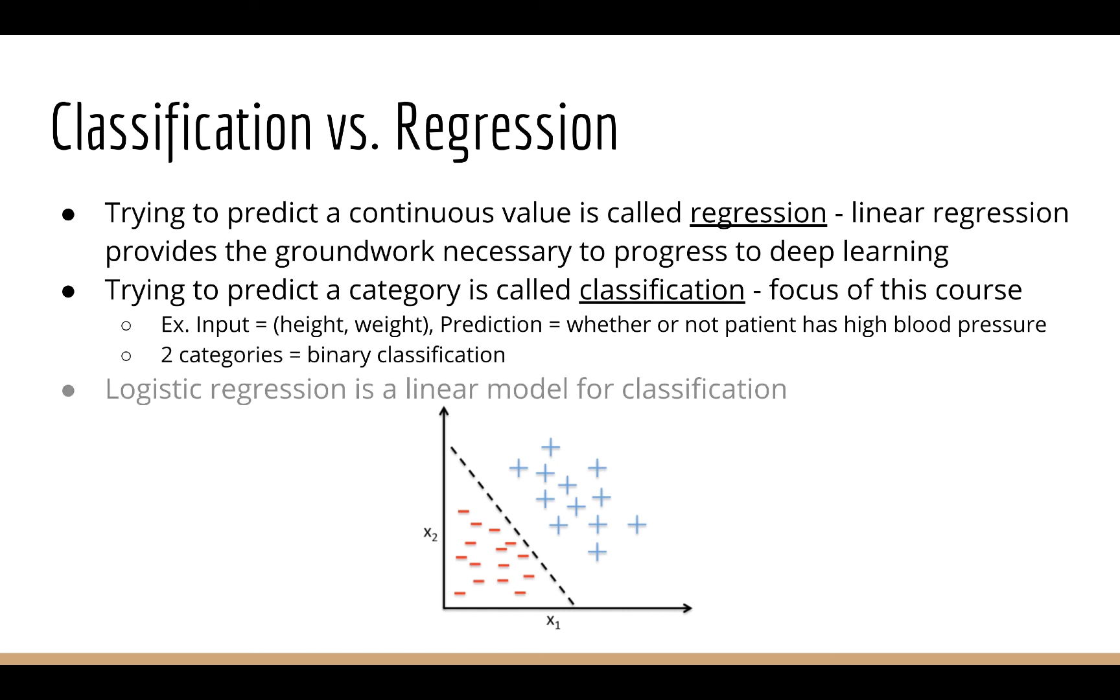Again, logistic regression uses a line or a plane for the model, but instead of this line or plane trying to predict a value, it now provides a boundary. We can say anything on one side of this line means not high blood pressure and everything on the other side of the line means high blood pressure. This is called binary classification because we're trying to predict the label out of two different categories. In this course we'll explore how to go from two to any number of categories.